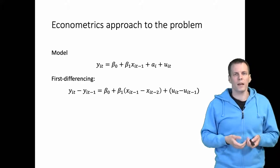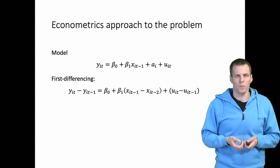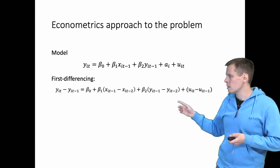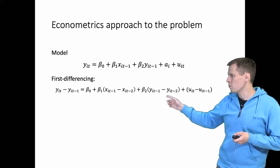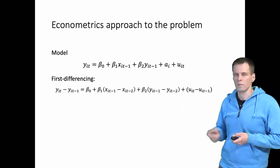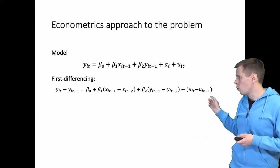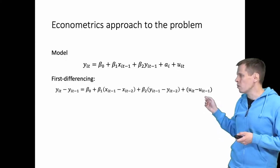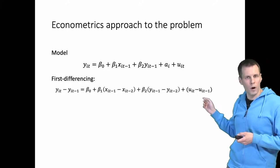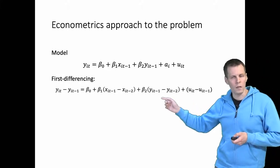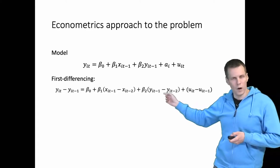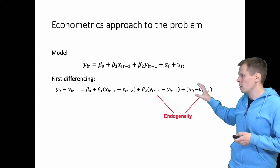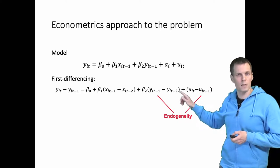When we have the lagged dependent variable as a predictor, things are more complicated. Looking at the first differencing estimator equations, we have Y_{t-1} minus Y_{t-2}, and the error term U_{t-1} appears in the composite error term. Because U_{t-1} is part of Y_{t-1}, we have an endogeneity problem — this error term is correlated with this difference.